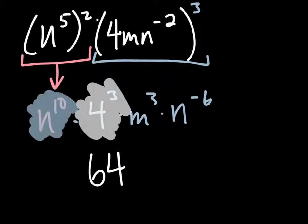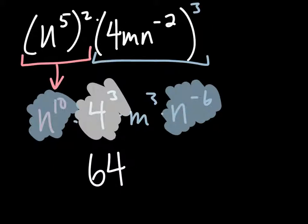And n to the tenth and n to the negative 6. Those both have bases of n. Those can be combined using our product of powers rule from the previous section. This is going to be n to the fourth.